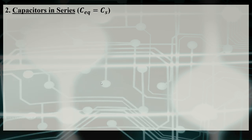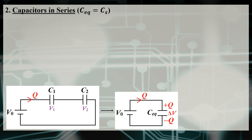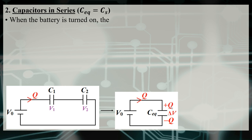Series is going to be a tougher derivation. We'll call the equivalent capacitance CS, meaning we're combining capacitors in series. A simplified diagram has battery V0, total charge Q, passing through capacitor C1 with potential difference V1, then capacitor C2 with potential difference V2. We want to simplify this to a circuit with a single battery and a single capacitor.